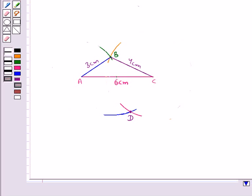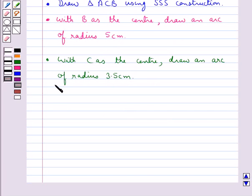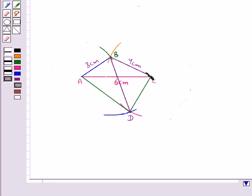Then in the next step we shall join AD, DC, and also BD. So we have joined AD, DC where CD is of length 3.5 cm, and BD where BD is the diagonal of the quadrilateral ABCD of length 5 cm.